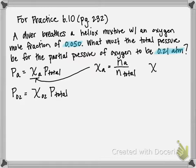In the problem, they give us mole fraction of oxygen, which is equal to 0.050. It's a unitless number. And they give us the partial pressure of oxygen that they want us to utilize, 0.21 atmospheres. So now what we're looking for is the total pressure of the system that's going to give us the desired mole fraction as well as the desired partial pressure of oxygen.